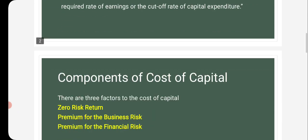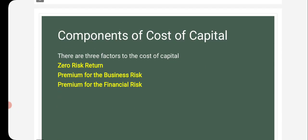The components of cost of capital. There are three factors to the cost of capital. The first is return at zero risk level — it relates to the expected rate of return when a project involves no financial or business risk.